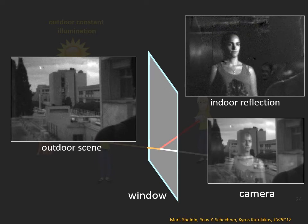The key for doing this is that outdoors sunlight does not flicker, but indoor lighting is affected by flicker.